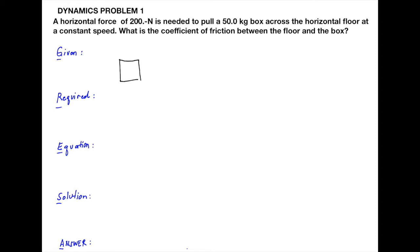In the free body diagram, we have 200 Newton as our applied force. The box is 50 kilograms, and to convert that into weight we multiply it by 9.8 meter per second squared. Therefore, the weight of that box is 490 Newton.